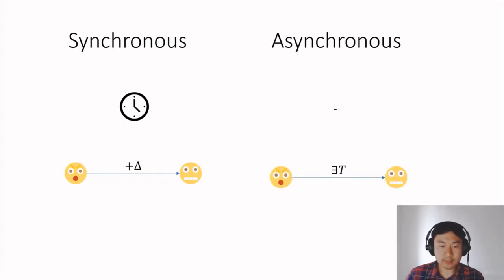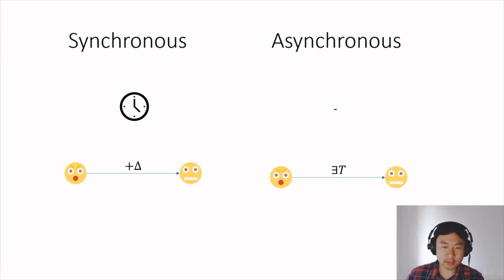The much more realistic model is the asynchronous model. This model does not make any assumptions on the synchrony of the clocks, and only uses the fact that messages sent by honest parties are eventually delivered.